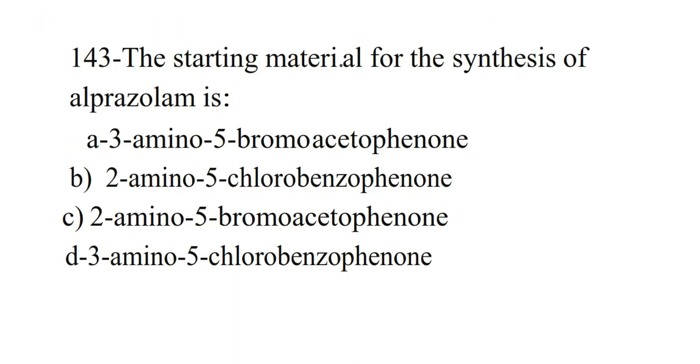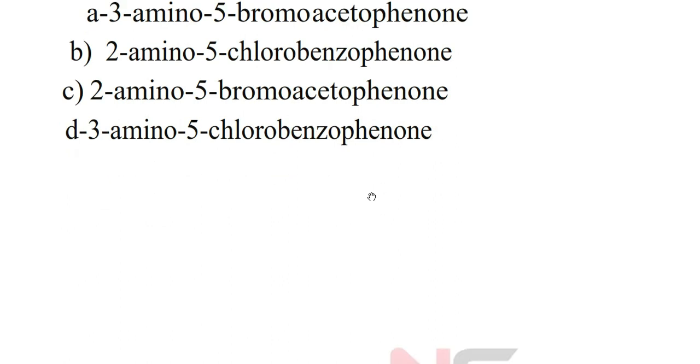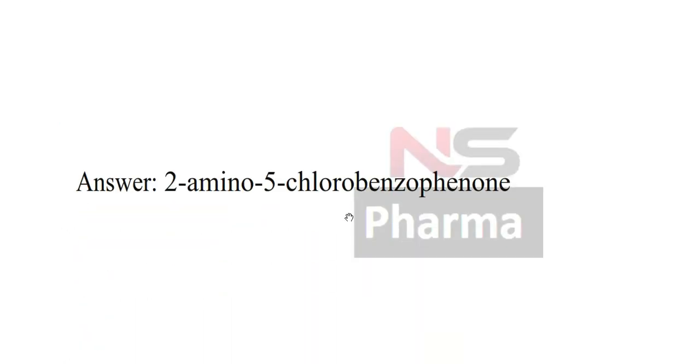Next question. The starting material for the synthesis of alprazolam is: Option A 3-amino-5-bromoacetophenone, Option B 2-amino-5-chlorobenzophenone, Option C 2-amino-5-bromoacetophenone, Option D 3-amino-5-chlorobenzophenone. Answer: 2-amino-5-chlorobenzophenone.